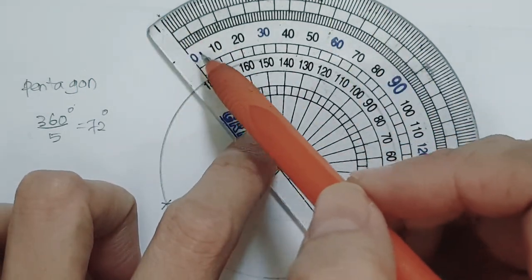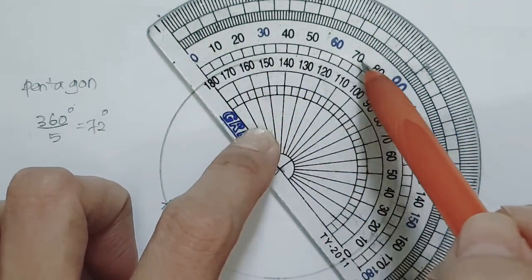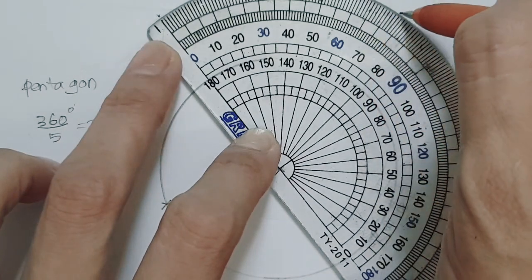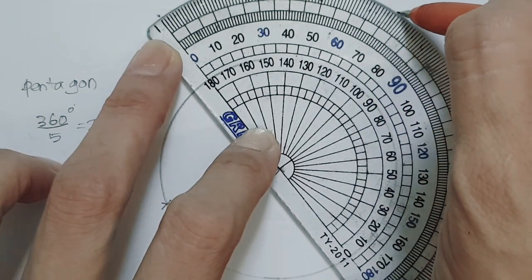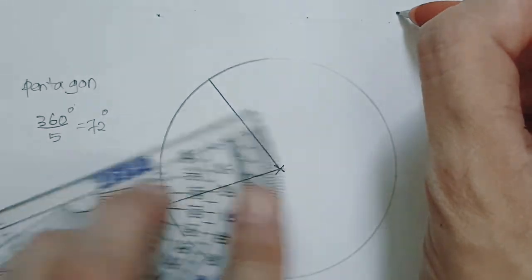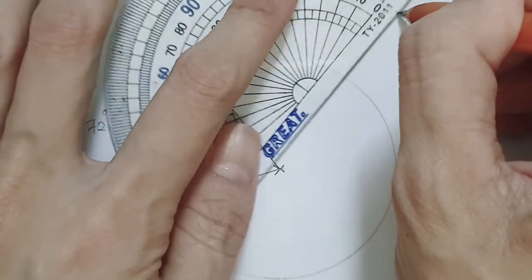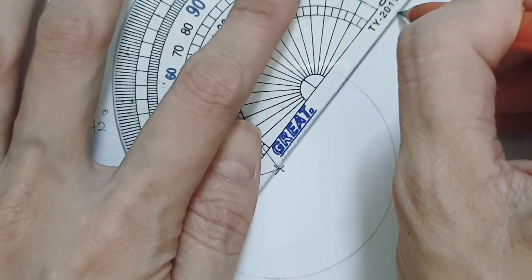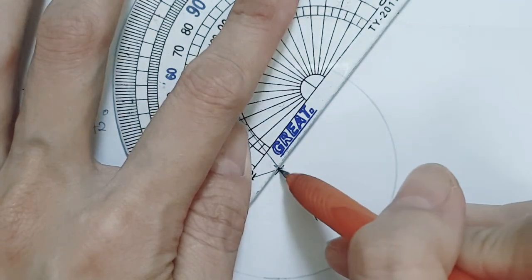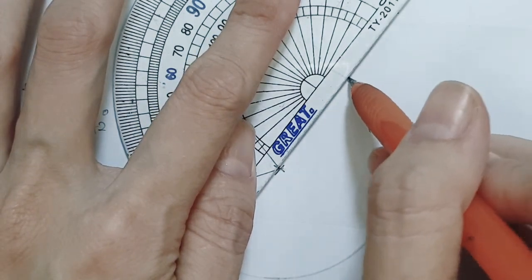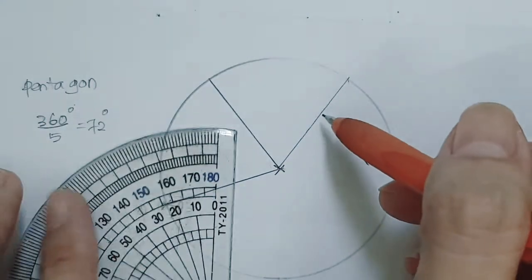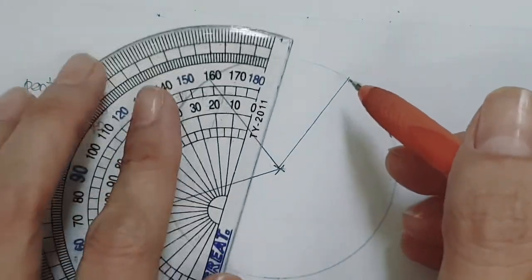Look at the outer scale which starts with zero and look for the 72 degrees again. And then join to the center of the circle. This will be our baseline again.